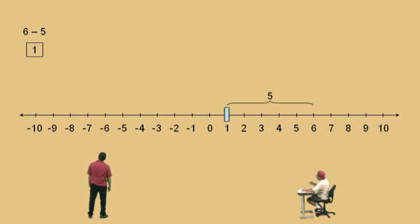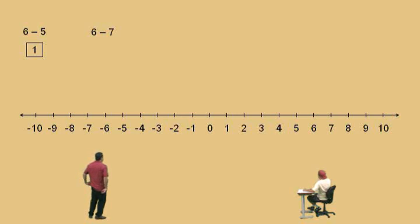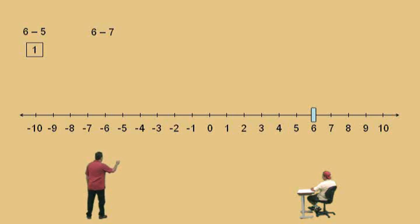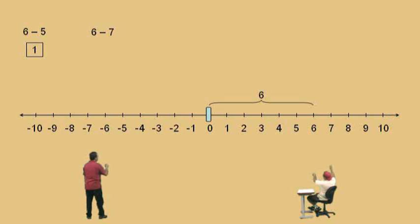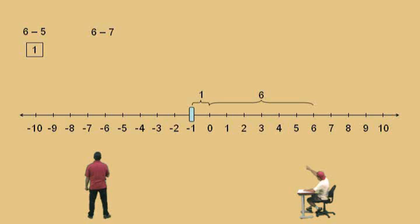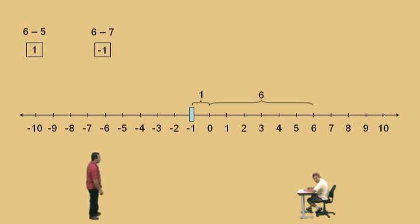Okay, let's do another problem: 6 subtract 7. Now here, we start at 6. Is our answer going to be positive or negative, Charlie? Negative. Why? Because you're going to cross 0. So notice, if we start at 6 and we move 6 places to the left, we're at 0. Now, remember, we start at 6 and we're supposed to move a total of 7, so if we move 6, we've got to move how many more, Charlie? One more. And that gives us what? Negative 1. Very nice. So our answer is negative 1.